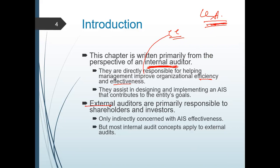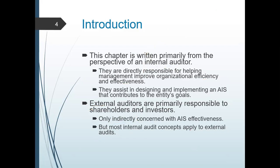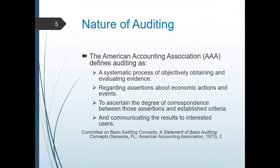The external auditor is primarily responsible to shareholders and investors because they are concerned with AIS effectiveness, but it is indirect — their main concern is the fairness of your financial statement. Your internal audit concept also applies to external audits. But why do we have external audits? Number one is for the independence of the audit — if the FS audit is done by your internal auditor, there will be bias, because your internal auditor will report according to what is favorable to the interest of the organization.